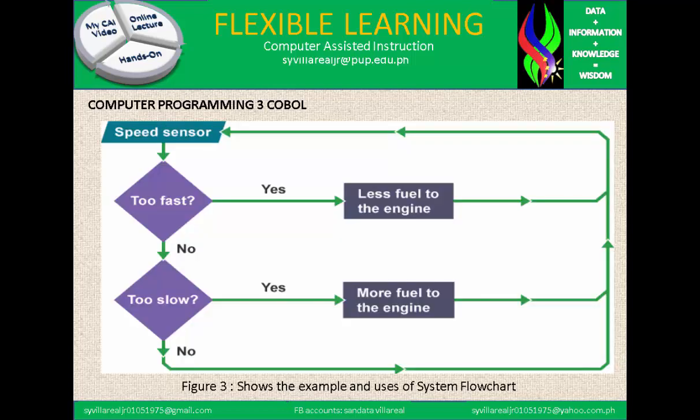In figure 3, the example of a system flowchart uses a speed sensor. If the speed is too fast, less fuel goes to the engine and it loops back to the sensor. If it's too slow, more fuel goes to the engine. If neither, it goes back to the speed sensor.